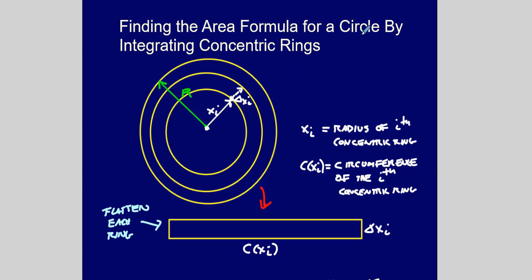Now let's get to the proof. We're going to find the area formula for a circle by integrating concentric rings. Concentric circles have a common center. Consider the ith concentric ring with radius x sub i, thickness delta x sub i, and circumference C(x sub i). We know C is a function of x because C = 2πx sub i — it changes based on the value of x.